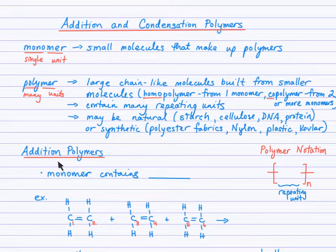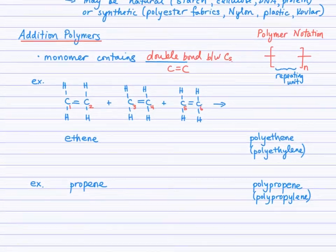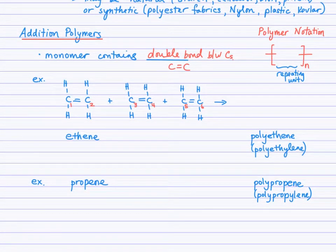So we'll move specifically now to addition polymers. If you think of an addition reaction, what does the molecule have to contain in terms of a functional group in order for it to undergo an addition reaction? Think about that for a moment. Yes, the monomer needs to contain a double bond, specifically between carbons, right? So C double bond C. That's what you're going to notice about the monomers for addition polymers.